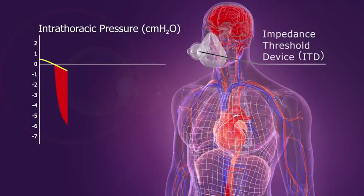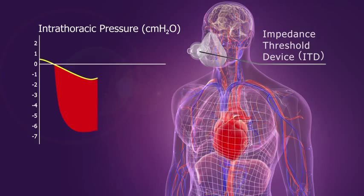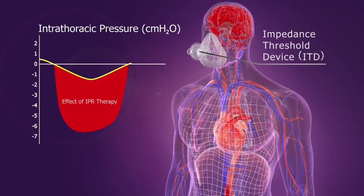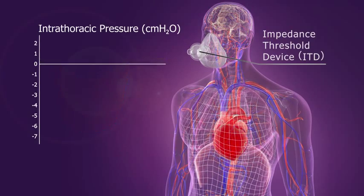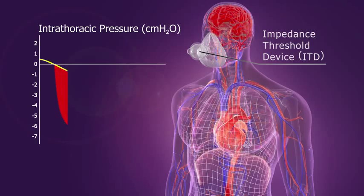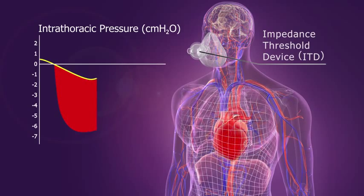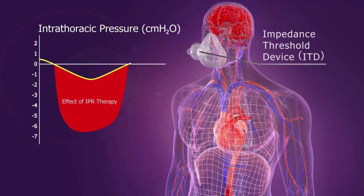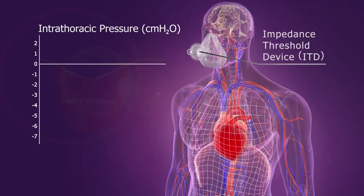IPR therapy is used to enhance negative intrathoracic pressure to help the body help itself in states of shock. Studies show that IPR therapy enhances the negative pressure in the chest by providing a slight amount of therapeutic resistance to the influx of air.